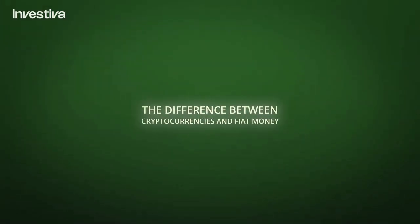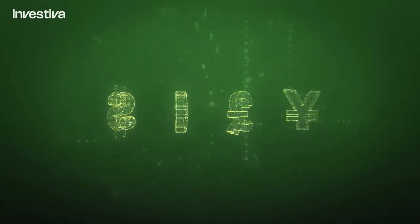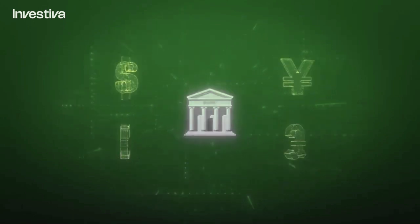The difference between cryptocurrencies and fiat money: the money we use every day, for example the US dollar, the euro, the British pound or the Japanese yen, is called fiat money and is controlled by central banks. The word fiat originates from Latin and translates to 'let it be done.'